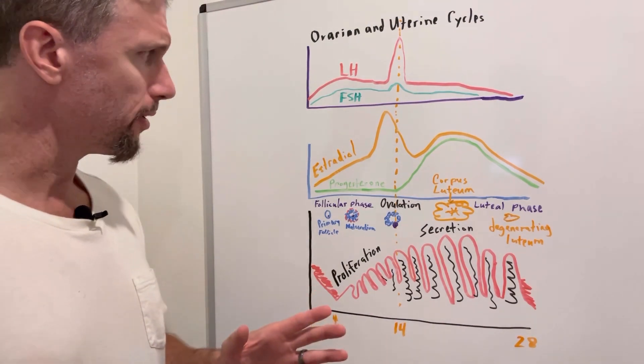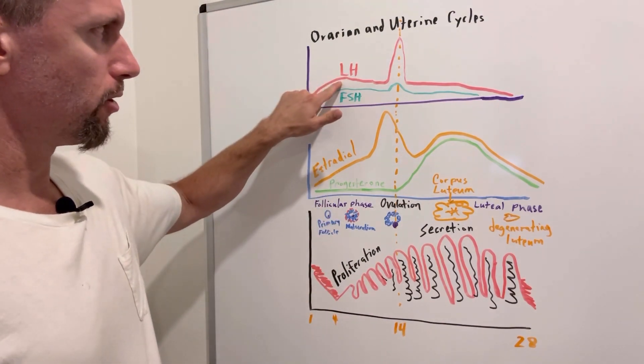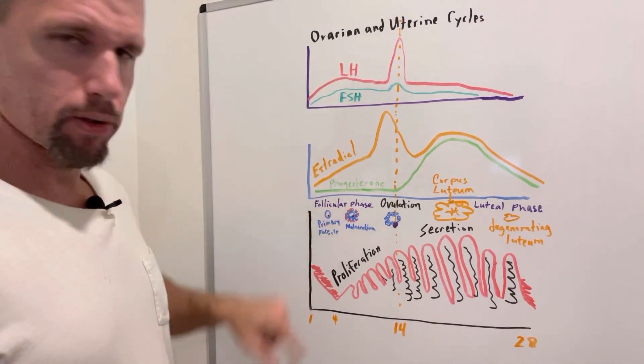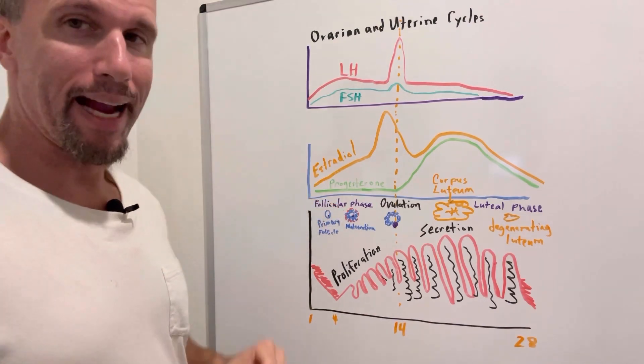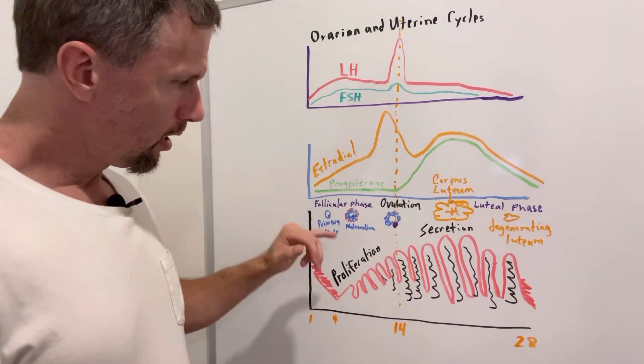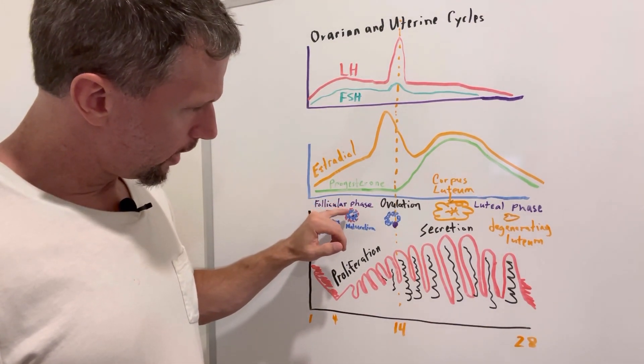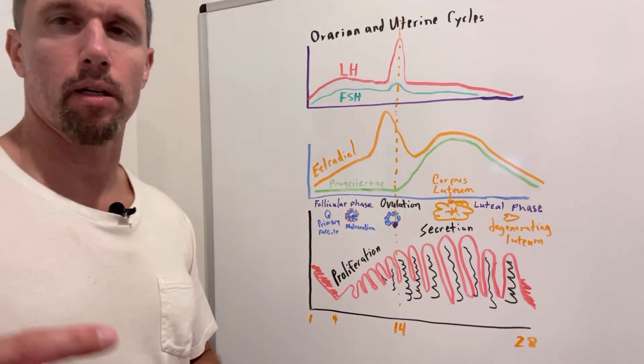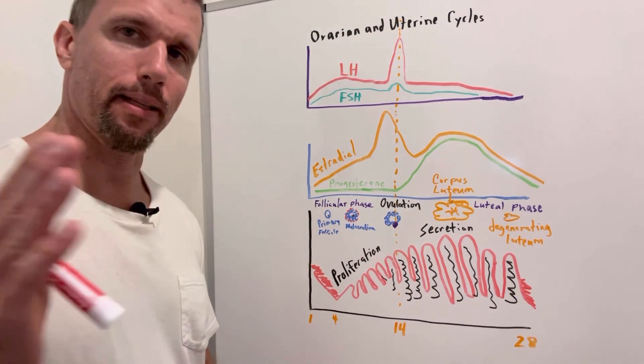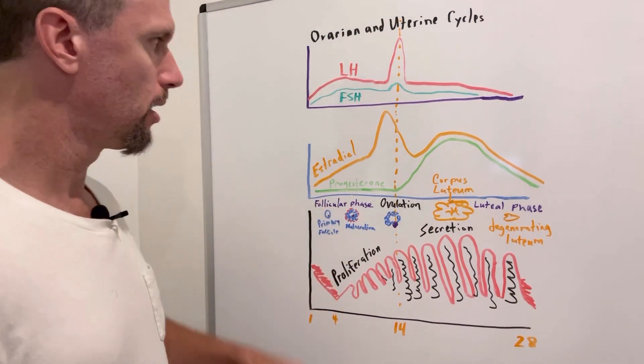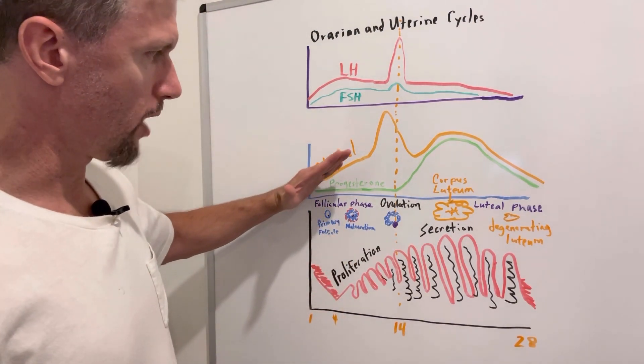The reason I'm going through all that is because this LH, luteinizing hormone, has receptors on these thecal cells. It's going to go and bind to those receptors, release androgens, the male hormone, the androgens will migrate inward to the granulosa cells, where there's an enzyme called aromatase that'll take the androgens into estradiol. So you can see estradiol is starting to rise here.